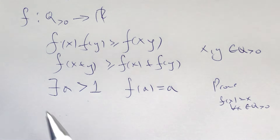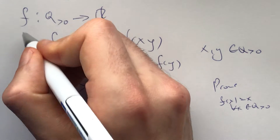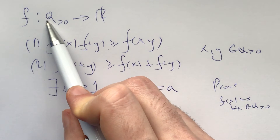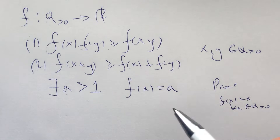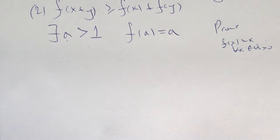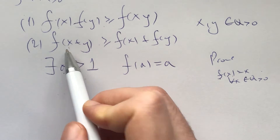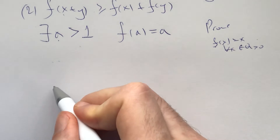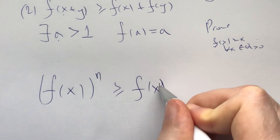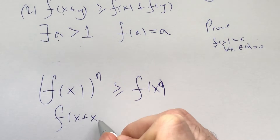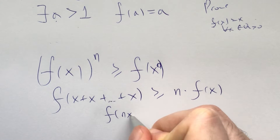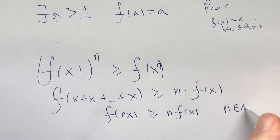In summary, we have a functional equation which satisfies two inequalities, inequality one and inequality two, and there exists one number in the positive rational numbers which satisfies f of that number equals that number. We need to prove that this functional equation maps every element onto itself. The first idea is to generalize: f(x^n) ≥ f(x)^n, and f(nx) ≥ n·f(x) where n is a natural number.